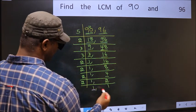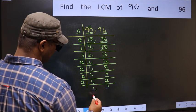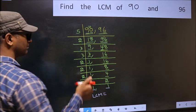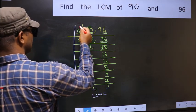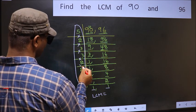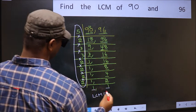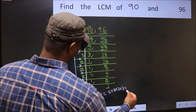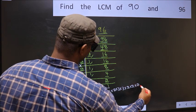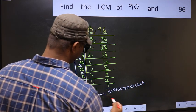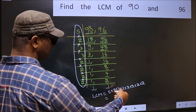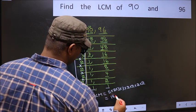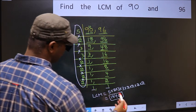We got 1 in both places, so our LCM is the product of these numbers. That is 5 × 2 × 3 × 3 × 2 × 2 × 2 × 2 × 2. When we multiply these numbers, we get 1440 as our LCM.